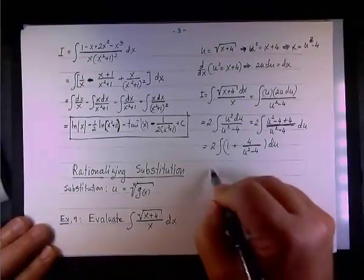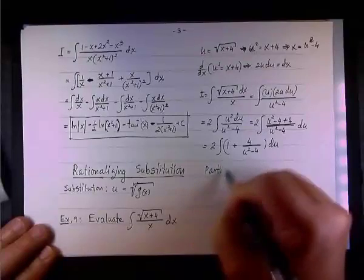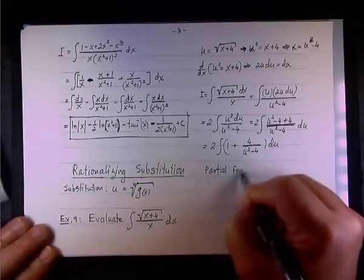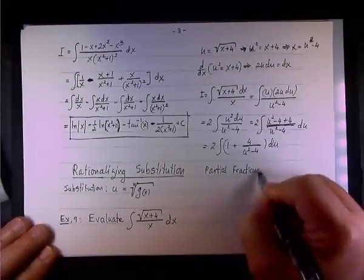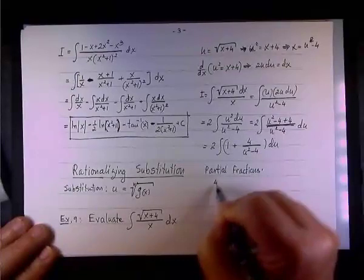Alright, so now what? Now I need to look at the partial fraction of 4 over u squared minus 4. This is fairly easy. So, partial fraction here.